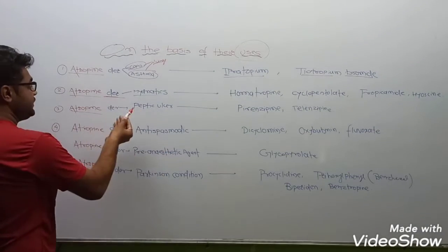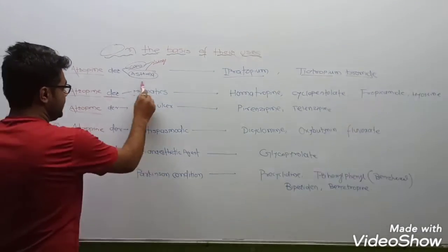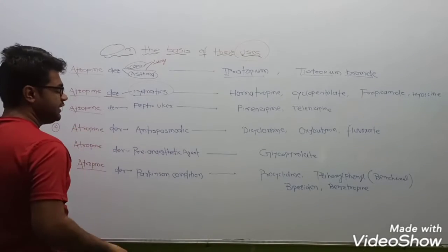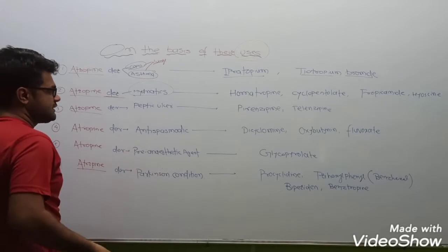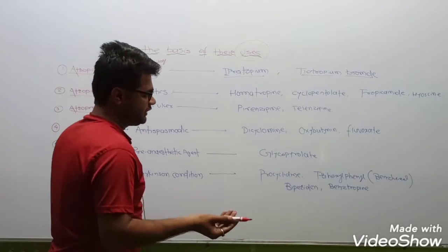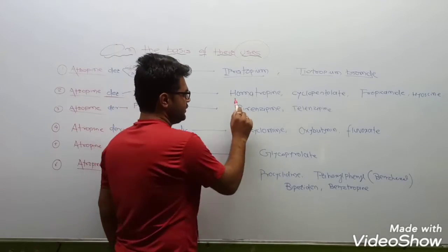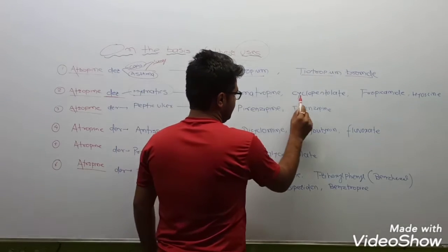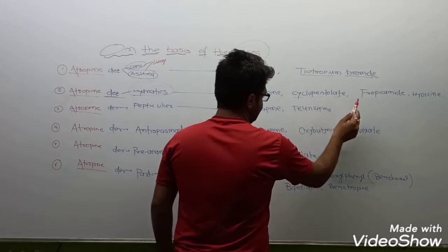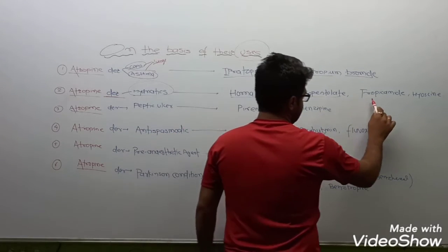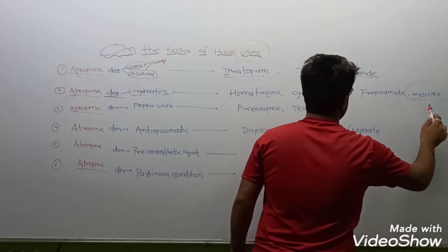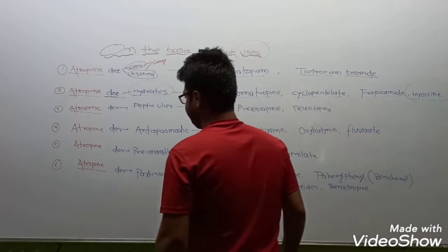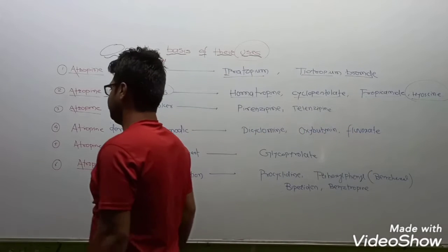Atropine derivatives used as mydriatic agents. There are three to four drugs: homatropine, cyclopentolate, tropicamide, and hyoscine.